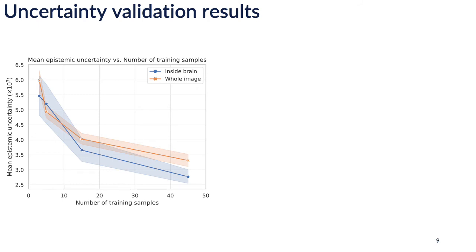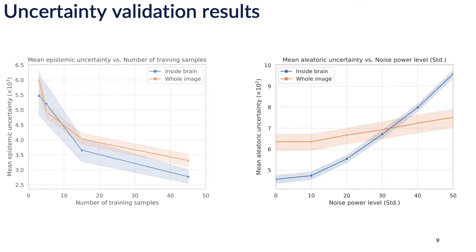To show that we capture aleatoric uncertainty, we used the network trained on 45 datasets and added varying levels of zero-mean Gaussian noise to the test data with standard deviations of 10, 20, 30, 40, and 50. The right-hand plot shows the mean aleatoric uncertainty over the brain mask in the blue line. As expected, we see it increases with the level of noise, corresponding to the definition of aleatoric uncertainty, which has to do with inherent uncertainty in the measurements.